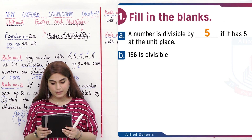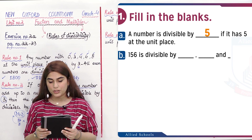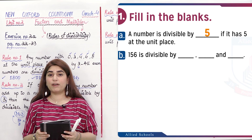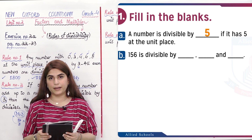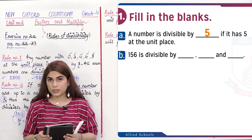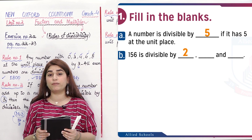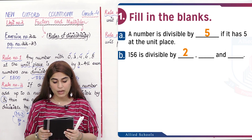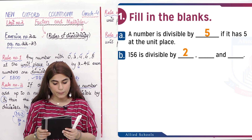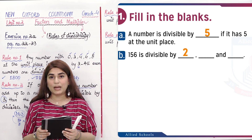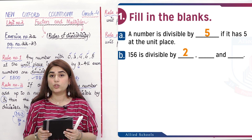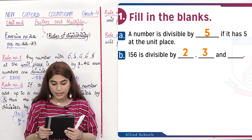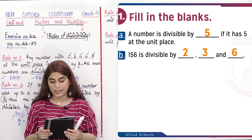Question (b): 156 is divisible by dash, dash and dash. First, check for 2: the last digit of 156 is 6, which is an even number, so it is divisible by 2. Next, check for 3: add the digits — 1 plus 5 is 6, and 6 plus 6 is 12. Since 12 is divisible by 3, the number is also divisible by 3. It is also divisible by 6.